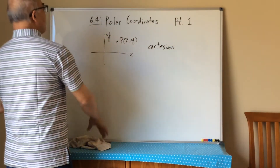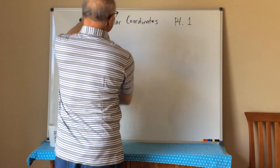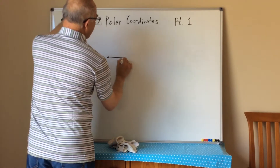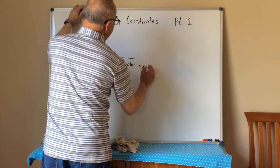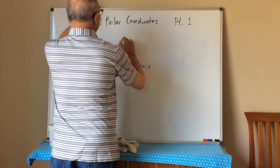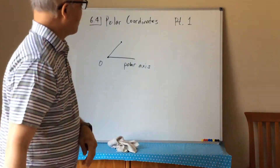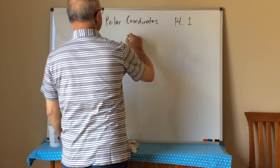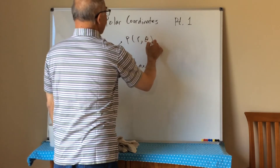Today we're going to talk about a polar coordinate system. In a polar coordinate system, we do not have two axes — we only have one axis. We start from the origin, and we have what's called a polar axis. From the polar axis, we have a directed angle theta and a directed distance r. We denote this point p as (r, theta).